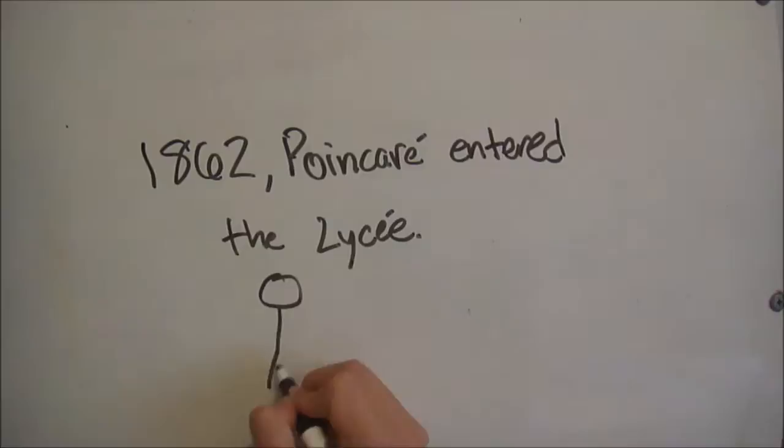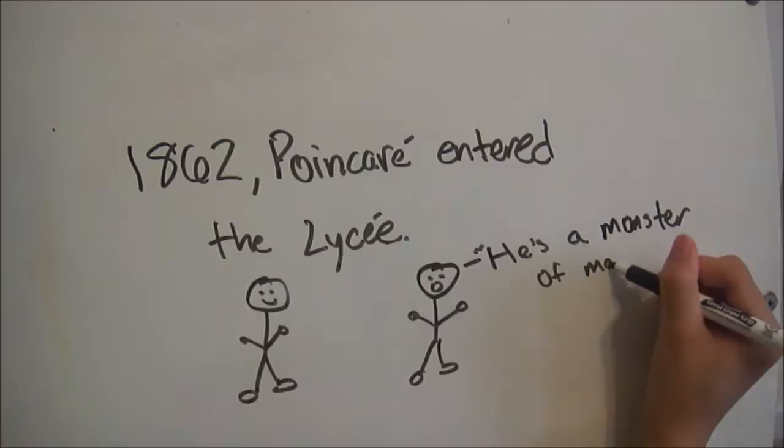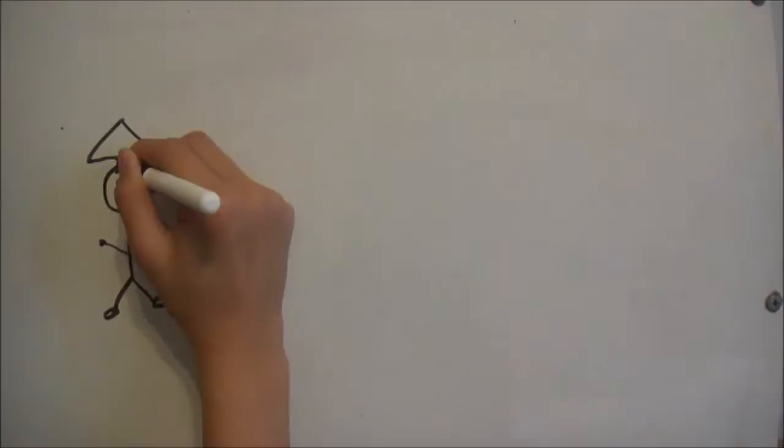In 1862, Henri entered the Lycée in Nancy and turned out to be the top student in every subject he studied. He won first prizes in many academic competitions and was described by his math teacher as a monster of mathematics.